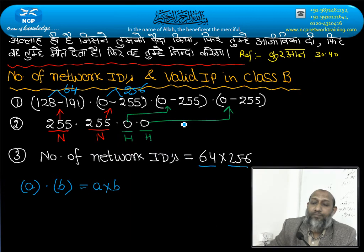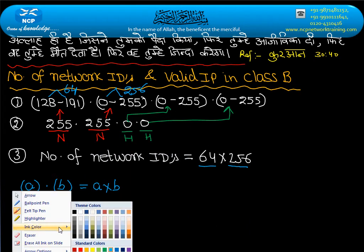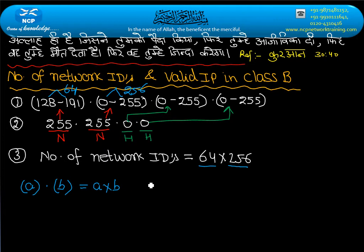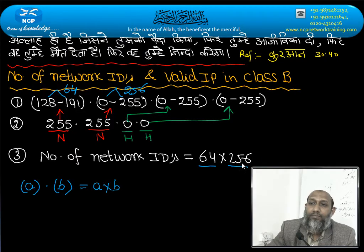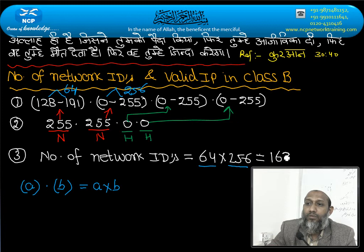64 into 256, this value is your value, 16384. How much? NIDs in Class B.